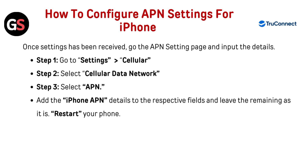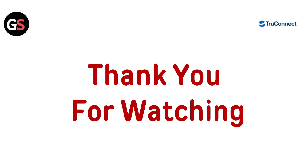How to configure APN settings for iPhone? Once settings have been received, go to the APN settings page and input the details. Step 1: Go to Settings, then Cellular. Step 2: Select Cellular Data and Network. Step 3: Select APN, add the iPhone APN details to the respective field, and leave the remaining as it is. Now restart your phone. Thanks for watching.